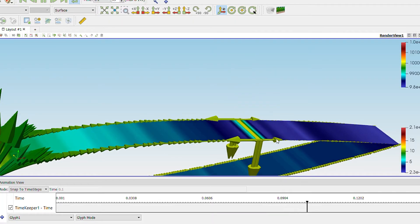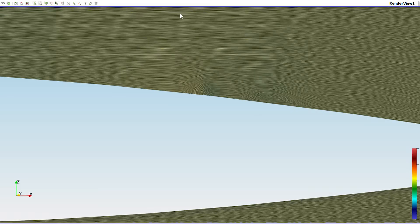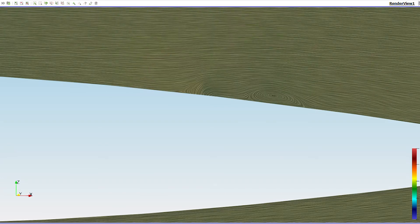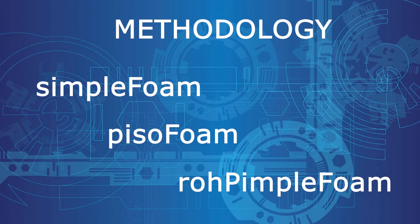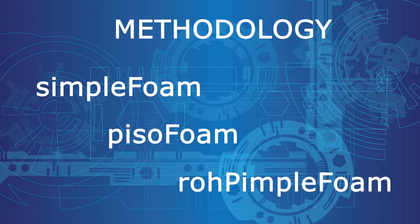Simulation for a lower Reynolds number was done in the beginning. After stabilization and convergence, the compressible conditions were introduced. Solvers were progressed from simpleFoam, pimpleFoam, and rhoPimpleFoam. With the appropriate boundary and initial conditions, the simulation was done for Mach number 0.4 and Reynolds number 12.7 million with K-Omega turbulence modeling. After analysis of the flow field, optimization was done for the 8-degree angle of attack.